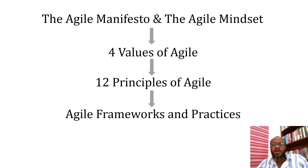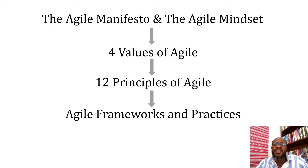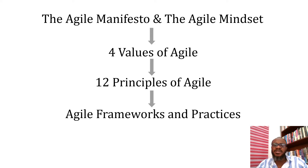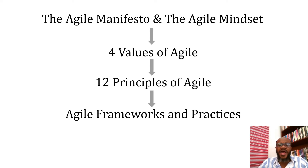The objective of the Agile Manifesto is to form an Agile mindset — to cultivate an Agile mindset for the people who must use Agile. It is made up of four values and 12 principles, and these four values and 12 principles actually culminate to form the Agile frameworks and practices that we use.